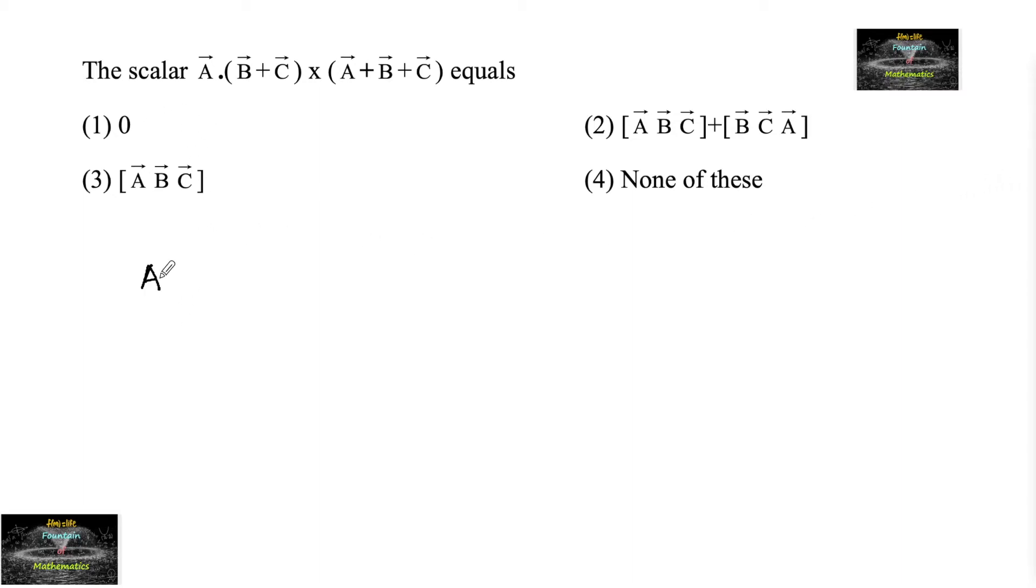The scalar A dot (B plus C) cross (A plus B plus C) equals. Let's consider this: B plus C.